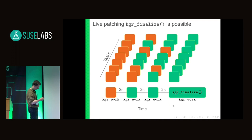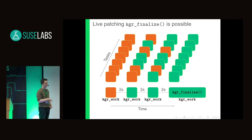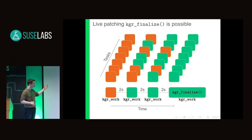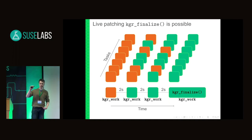On the time axis, the KGRAFT core periodically schedules work checking if the system has been migrated globally. As soon as it recognizes this is true, it invokes a cleanup function called kgr_finalize. The important point is that this is called from a migrated or transitioned kworker thread. So if kgr_finalize gets live-patched, it ends up in the live-patched implementation, which allows a live-patch to hook into that function and receive notice when the transition has completed globally.